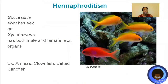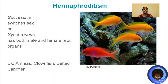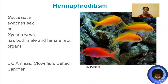In hermaphroditism, it can either be successive or synchronous. Successive means it switches from one sex to the other, typically female to male. Synchronous means the fish has both male and female reproductive organs at the same time. Some examples are anthias, like the ones in the photo, clownfish or anemone fish, and belted sandfish — which, fun fact, can switch sex in just a handful of seconds and can switch back and forth.